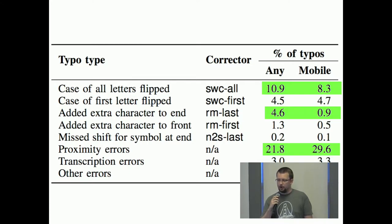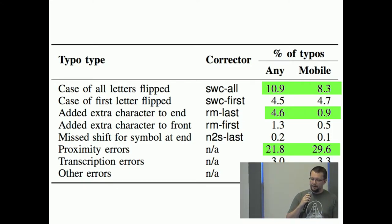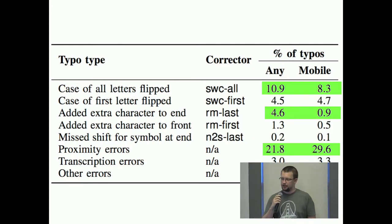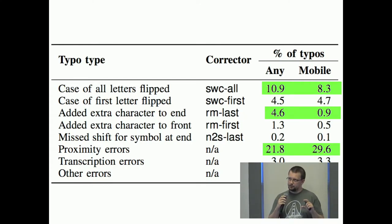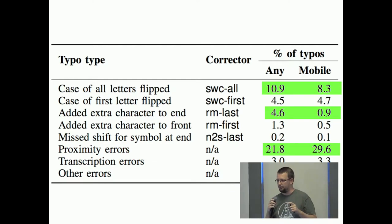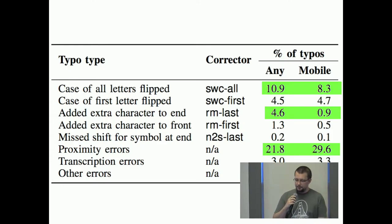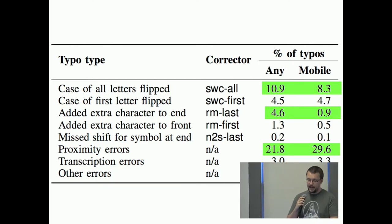Proximity errors are more common on mobile just because the keyboard is smaller, making it harder to type accurately. It's also less likely that you add an additional character on mobile. All-letter case switching — from uppercase to lowercase — is less common on mobile because mobile keyboards automatically switch back to normal letters.